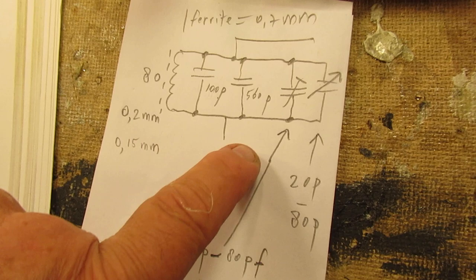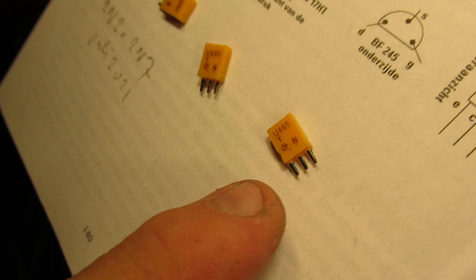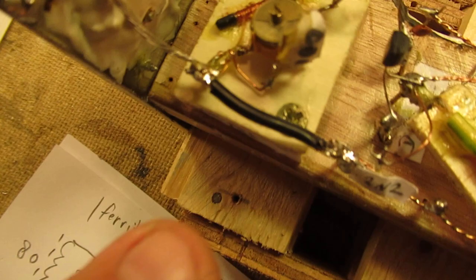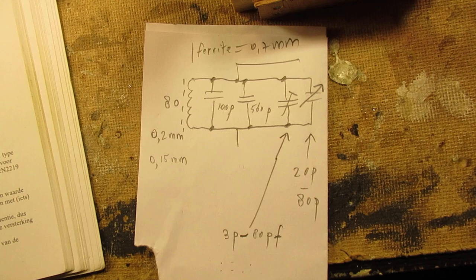Then we have a capacitor that has to do the precise tuning to the IF frequency of 465 kilocycles. And you see that bunch of capacitors. Of course I can straighten them out, but here is that complete bunch of capacitors that you also see in this drawing.